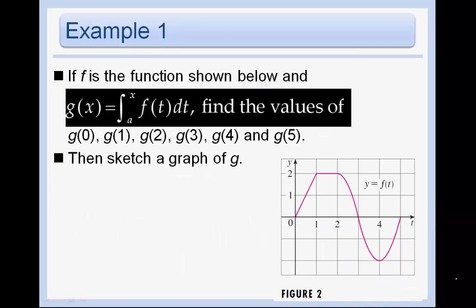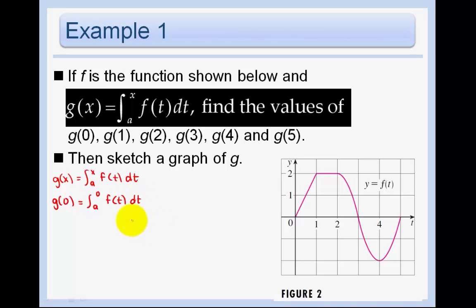If f is the function shown below and g of x equals the integral from a to x of f of t dt, find the values of the following. We know g of x is the accumulator function. For g of 0, we let a equal 0 since 0 is the smallest value we see. The integral from 0 to 0 — what is the area under the curve from 0 to 0? That's just 0.